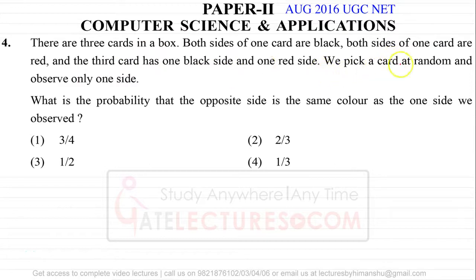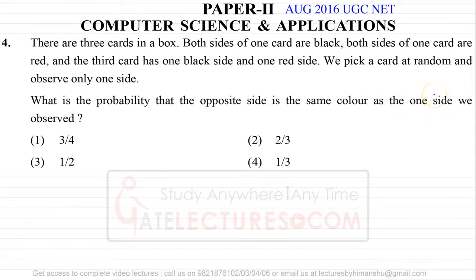We pick a card at random and observe only one side of the card. What is the probability that the opposite side is the same color as the one side we observed?